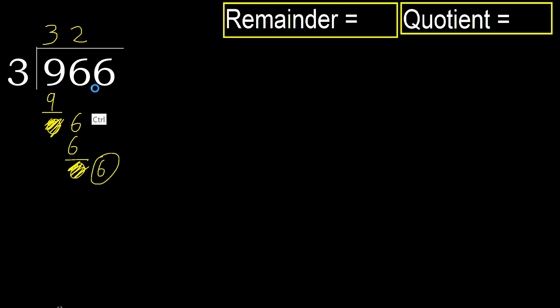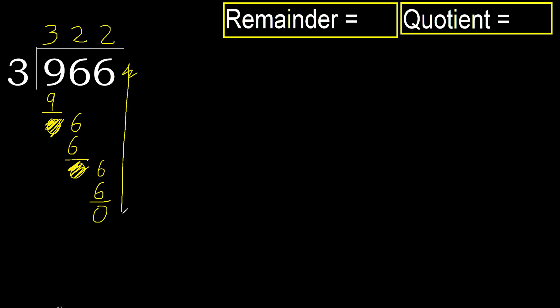6. 3 multiplied by 2 is 6, it is not greater. Subtract. Next. That is not a number, therefore finish it.